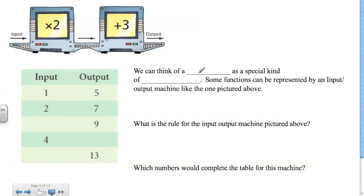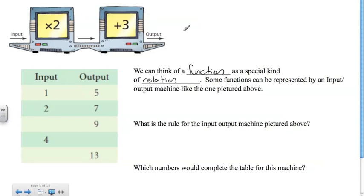We can think of a function as a special kind of relation. Some functions can be represented by an input-output machine, like the one pictured above. One number goes in, it's being transformed, and then it's spit out as the transformed number. Here we have a table showing a relation, and the association in this case is the operations we're applying to the sets.